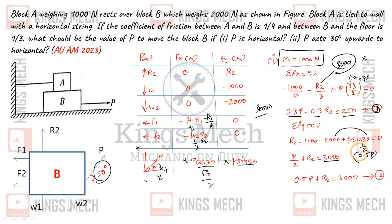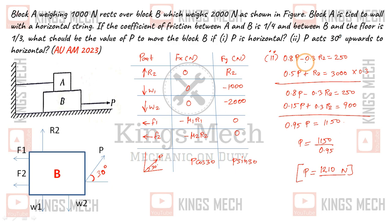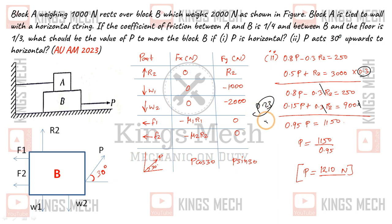Applying summation Fy = 0 for Case 2: R2 minus 3000 plus P sin 30 = 0, giving 0.5P plus R2 = 3000. This is Equation 2. Solving Equations 1 and 2 simultaneously: substituting R2 from Equation 2 into Equation 1 and simplifying gives the value of P for the inclined case.